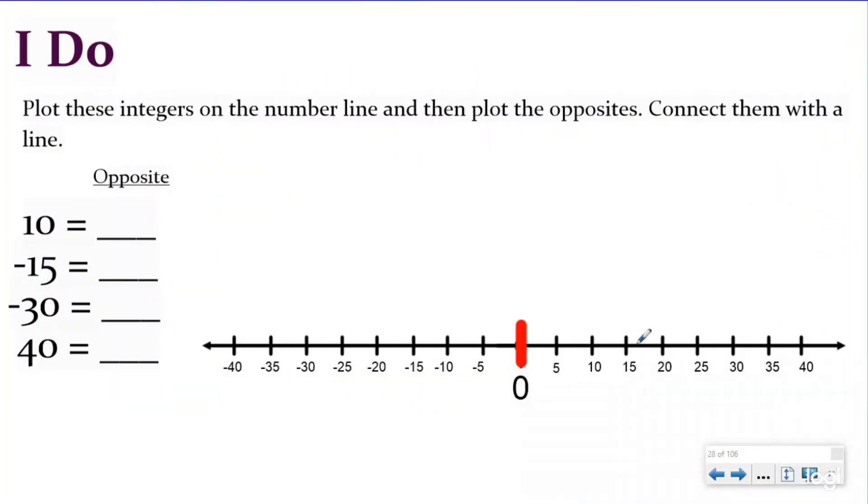Our I do problem says plot these integers on the number line right here, and then plot the opposites, connect them with a line. And so our first integer is 10. So it's a positive 10 because it doesn't have a negative sign. We make the inference that it's positive. And if you look down here, you can be real careful that you always look at the scale or the intervals of the number line, because here we're not counting by one. We're counting by five. So positive 10 would be 10 units to the right. And we would put that dot right here.